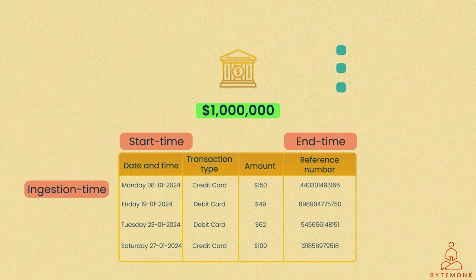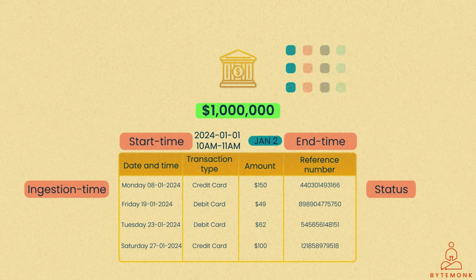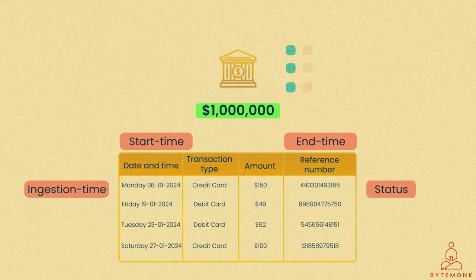They aid developers in comprehending the batch status and detecting any anomalies. For instance, if a batch containing payments made between January 1, 2024, 10 a.m. and January 1, 2024, 11 a.m. is only ingested on January 2, 2024, it indicates a potential issue with the ingestion layer. Tracking the ingestion time also helps in preventing duplicate entries.